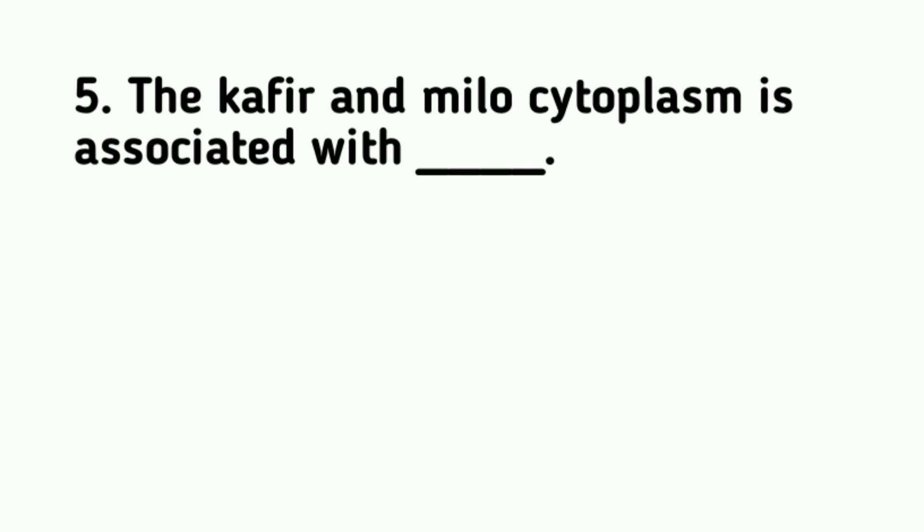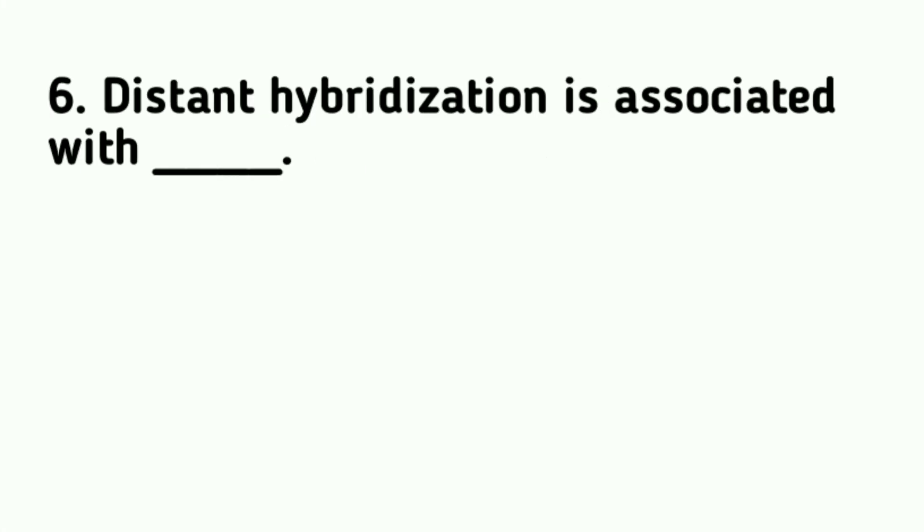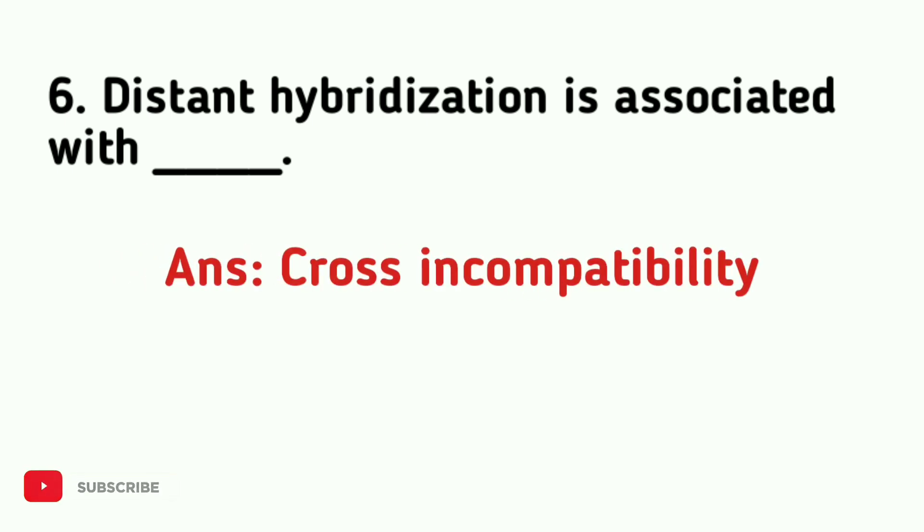The kafir and myelocytoplasm is associated with Sorghum. Distant hybridization is associated with cross incompatibility.